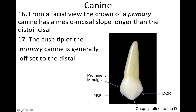The canine: from a facial view, the crown of the primary canine has a mesio-incisal slope longer than the disto-incisal, or you can say the mesial cusp ridge is going to be longer. That's because the primary canine cusp tip is offset to the distal.